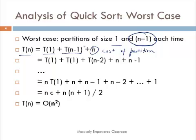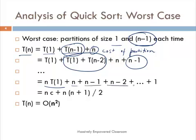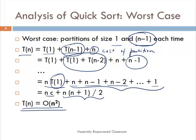If we substitute n-1 in the same formula and apply the substitution method, T(n-1) becomes T(1) + T(n-2) + (n-1). If we keep on doing this, we get n times T(1) plus the summation n + (n-1) + (n-2) + ... + 1. This summation is n(n+1)/2. Since T(1) is a constant, the dominant term is of the order n². So the worst case complexity of quicksort is O(n²).